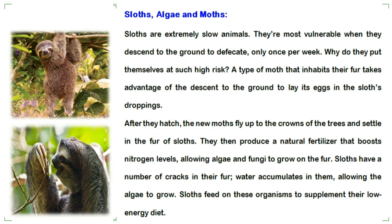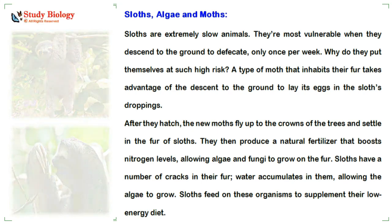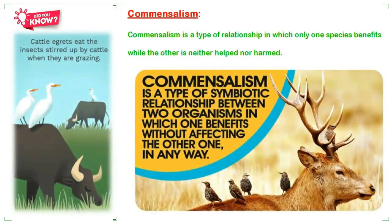Sloths are extremely slow animals and are most vulnerable when they descend to the ground to defecate — which they do only once per week. A type of moth that inhabits their fur takes advantage of this descent to lay its eggs in the sloth's droppings. After hatching, the new moths fly up to the tree crowns and settle in the fur of sloths. They then produce a natural fertilizer that boosts nitrogen levels, allowing algae and fungi to grow on the fur. Sloths have cracks in their fur where water accumulates, also allowing algae to grow. Sloths feed on these organisms to supplement their low-energy diet.